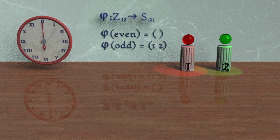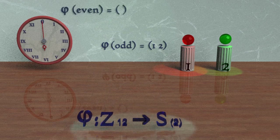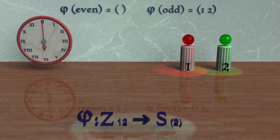And that will be our function, our map from Z_12 to S_2, even integers to the identity, and odd integers to the transposition.